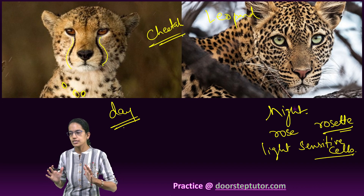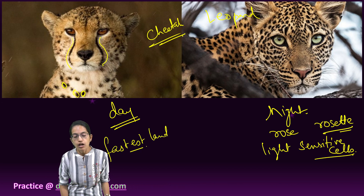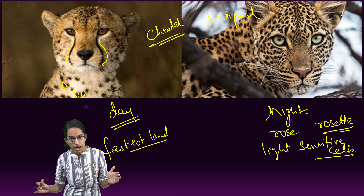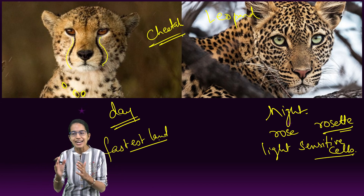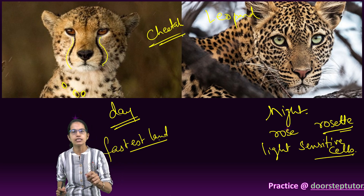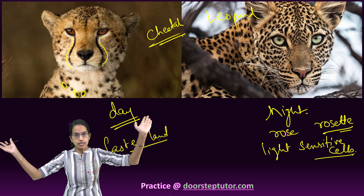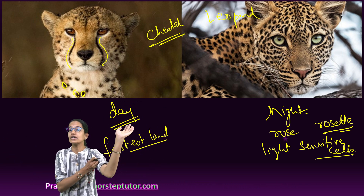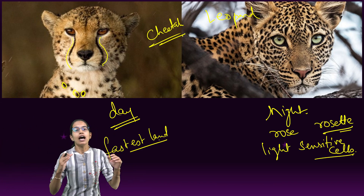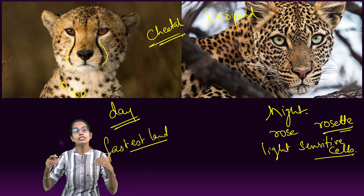Cheetah is considered the fastest land animal on earth. There is a difference between African and Asiatic cheetah, which we would cover in a separate lecture. The speed for the African cheetah has been cited because African cheetahs have huge open savannah grasslands where they can run for miles. However, the Asian cheetah are limited by rugged terrains, and therefore a straight open grassland where speed could be recorded is not found.